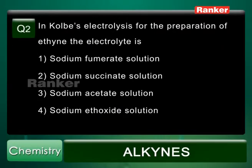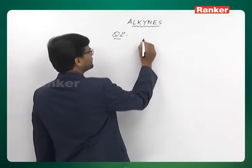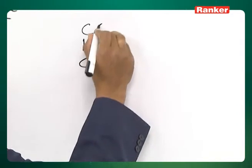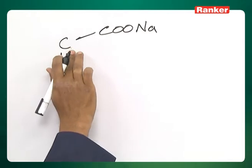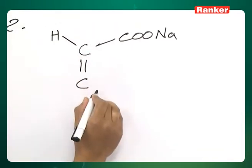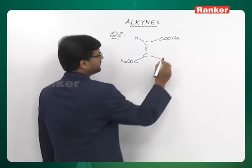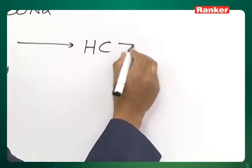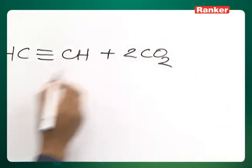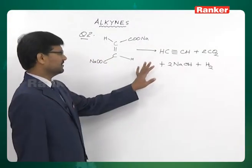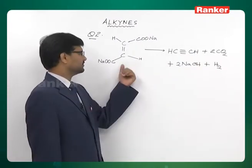Question number two: In Kolbe's electrolysis for the preparation of ethyne, the electrolyte is — first option sodium fumarate, second option sodium succinate, third option sodium acetate, and fourth option sodium ethoxide. The correct answer is sodium fumarate. Sodium fumarate has a double bond with COO⁻Na⁺ groups. When it undergoes electrolysis, it produces HC≡CH, two moles of CO₂, two moles of NaOH in solution, and hydrogen gas. Ethyne is prepared by electrolysis of sodium fumarate.